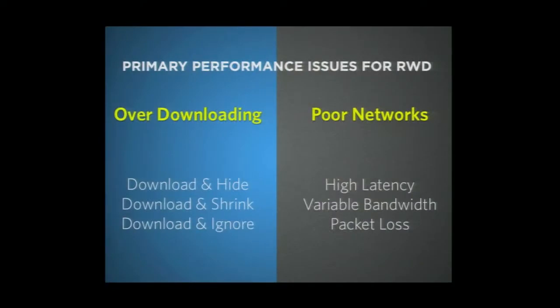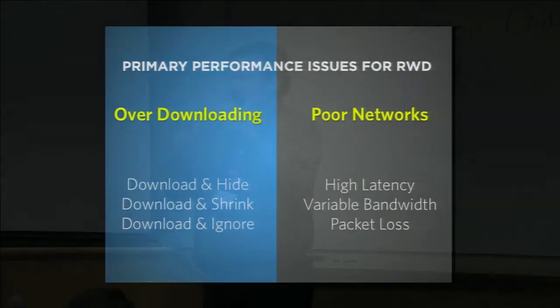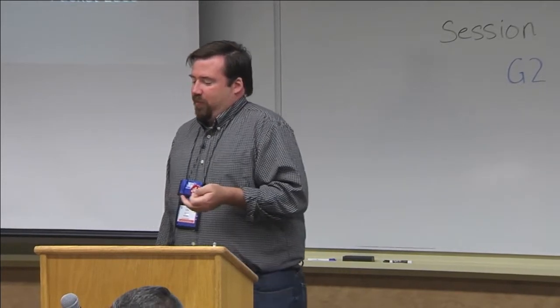What are the primary performance issues for responsive web design? In one bucket we have over-downloading. The fun thing to do with responsive web design — we have a div with some images in it that doesn't quite fit in 320 pixels, so we do display:none. Fantastic, it's gone. The user can't see it. But the browser is still parsing that document and still downloading those images. Display:none is horrible — do not use it as a solution for your content needs.